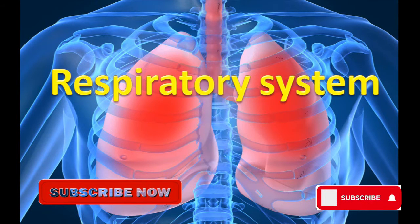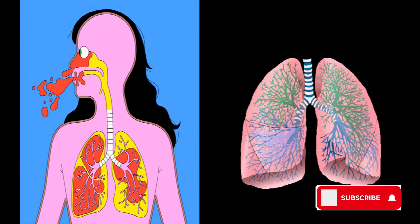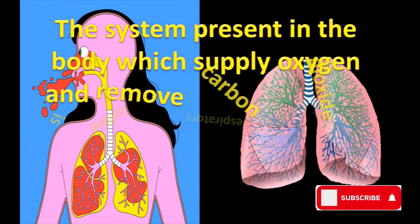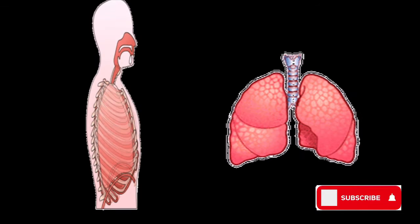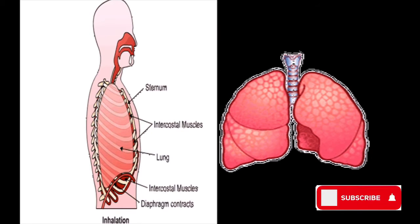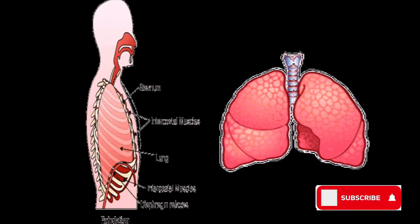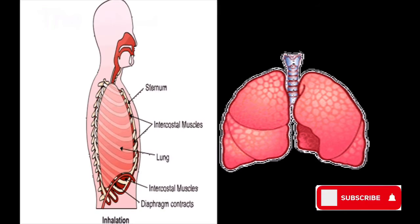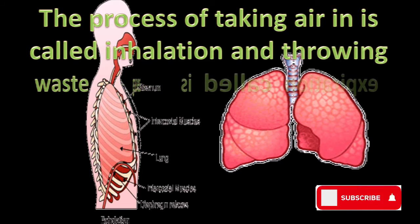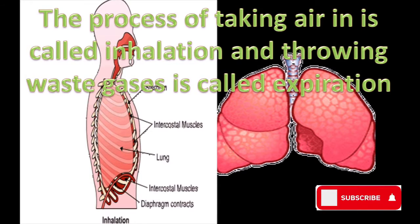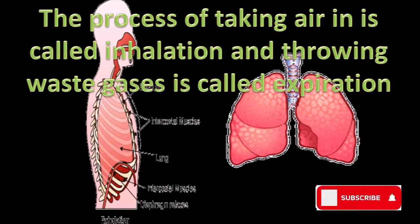The respiratory system is the system present in the body which supplies oxygen and removes carbon dioxide. The process of taking air in is called inhalation, and throwing out waste gases with carbon dioxide is called expiration.